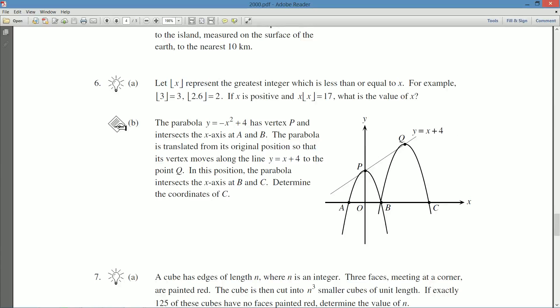For example, the floor of 3 is 3, because 3 is the greatest integer which is less than or equal to 3. The floor of 2.6, well, the greatest integer less than or equal to 2.6. 2.6 is not an integer, but it is more than 2 and less than 3, so the answer is going to be 2.